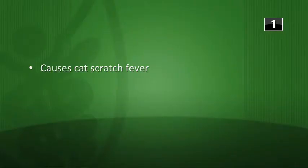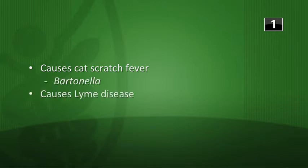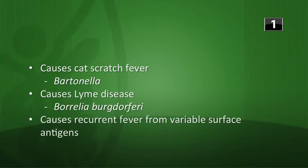It's time for the three-question warm-up for biochem 7. Which zoonotic bacteria fit the following description? The first one causes cat scratch fever - that's going to be Bartonella. Causes Lyme disease - that's Borrelia burgdorferi.